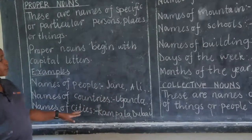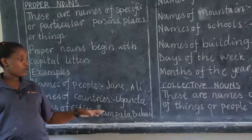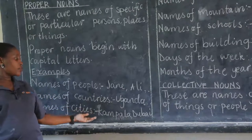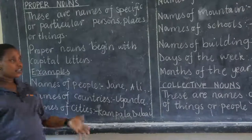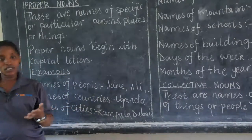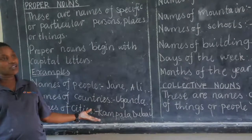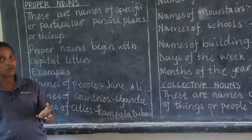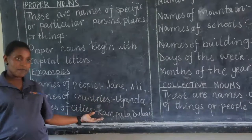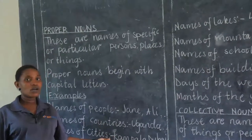Then we say names of cities, like our own Kampala. I begin with my own because I am a patriot. Some of you will start saying London, Dubai, and leave out your own. Some of you even forget that Kampala is the capital city of Uganda and think London is. Kampala is the capital city. When you want to write Kampala, it is a proper noun — begin with a capital letter.